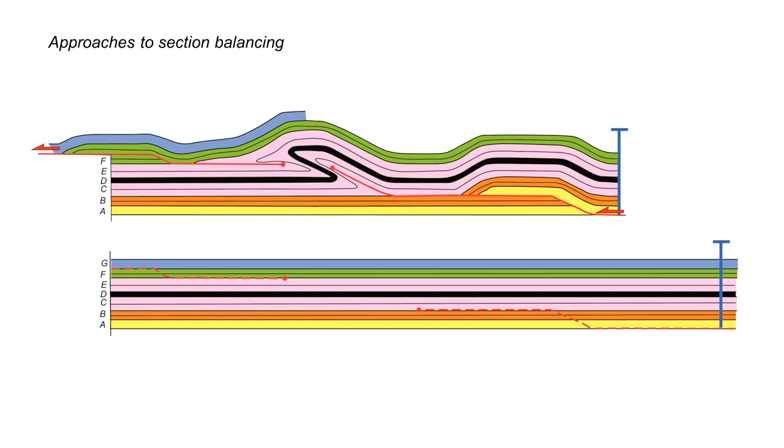So let's look at some approaches to section balancing and the first one we're going to do is so-called line length or bed length balancing and in this we assume that the layers that we're analyzing have simply been folded concentrically.